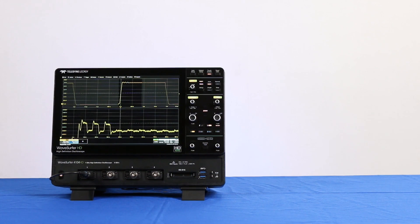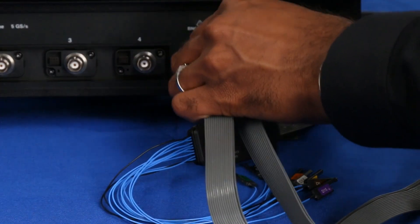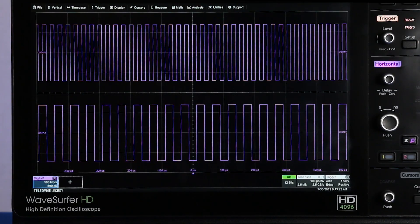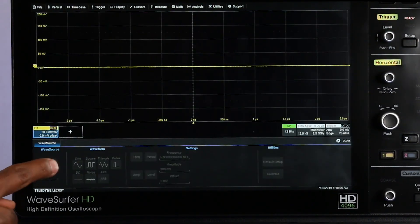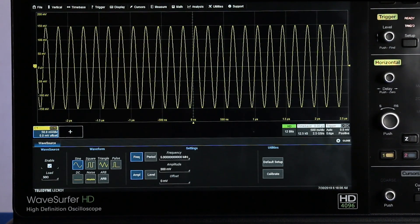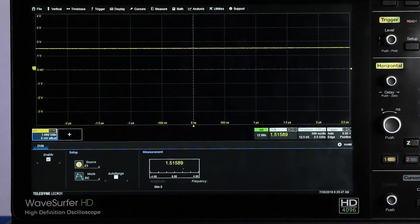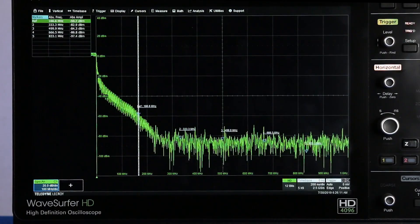WaveSurfer 4000HD is a 12-bit oscilloscope for the price of 8 bits and has 6 instruments rolled into one. An oscilloscope, an MSO with 16 digital inputs, an arbitrary waveform generator, a digital voltmeter, a frequency counter and a spectrum analyzer.